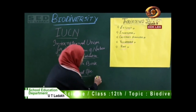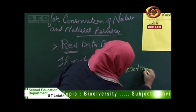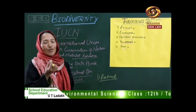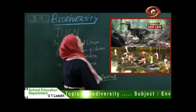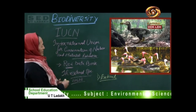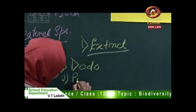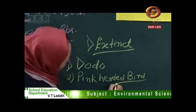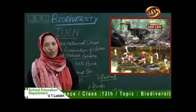First one is extinct species. Extinct species are those species whose last members have gone missing — they are extinct from the earth. I'll show you pictures of two birds: the first is the dodo bird and the second is the pink-headed bird. Both of these birds are already extinct from the earth; we can only see their pictures in books or in a museum.